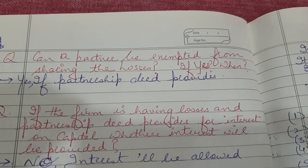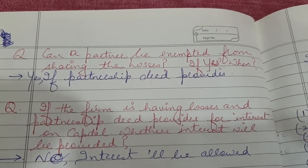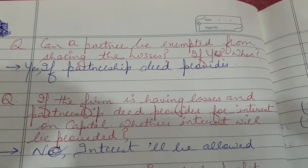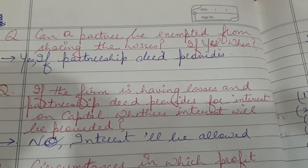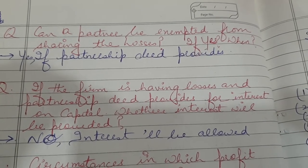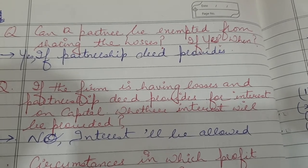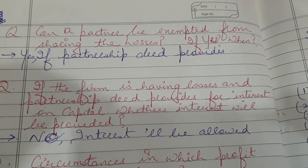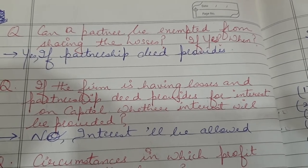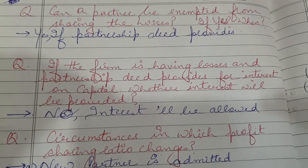Can a partner be exempted from sharing the losses? Yes, a partner can be exempted from sharing the losses, but only if the partnership deed provides for it. If the firm is having losses and the partnership deed provides for interest on capital, that interest will not be provided — because the firm is incurring losses, no interest will be allowed.